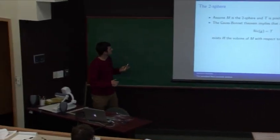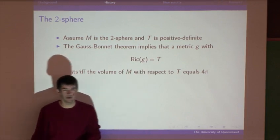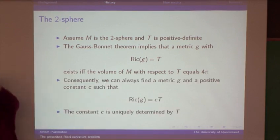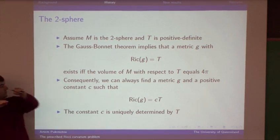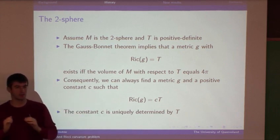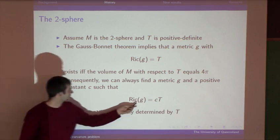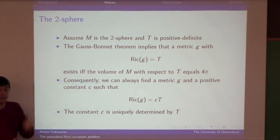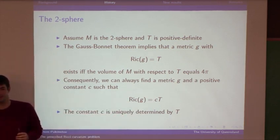This means that if you're given a tensor T, it's quite unlikely that you'll find a Riemannian metric with Ricci curvature T — its probability is zero. However, you can always scale your tensor, multiply it by a number, to ensure its volume becomes 4π, and then you know a Riemannian metric exists. The conclusion is that on S², when T is positive definite, we can always find a metric G and a constant C such that Ricci(G) = CT, and this constant C is uniquely determined by T.